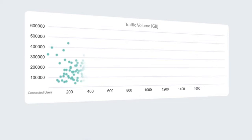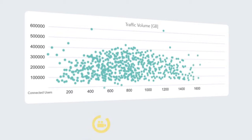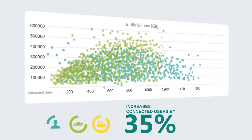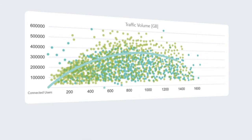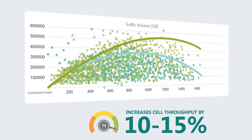As a result, Flash Networks ExtraAir increases the number of radio connections and connected users that can be served by 35 percent, and increases cell throughput by 10 to 15 percent. It does this while preventing congestion and accelerating network speeds, which all add up to a superior radio-spectral efficiency.